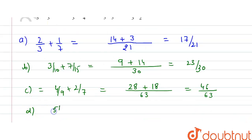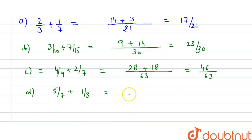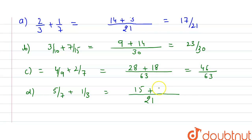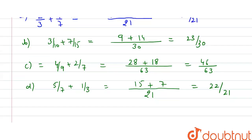Part (d) is 5/7 + 1/3. The LCM of 7 and 3 is 21. So 3 × 5 = 15, and 7 × 1 = 7. Adding gives 22/21.